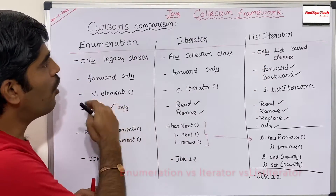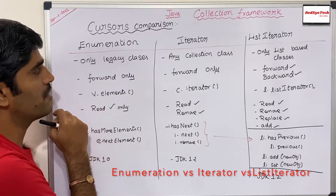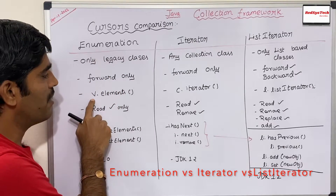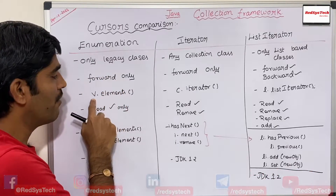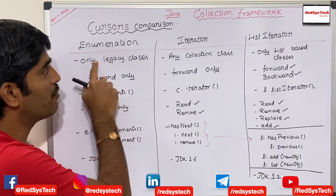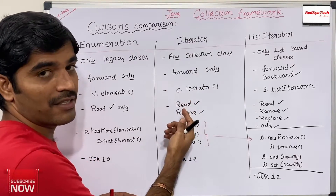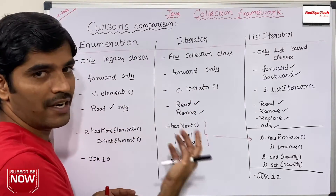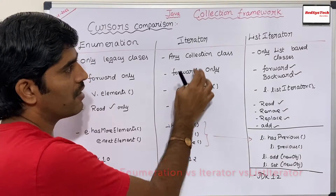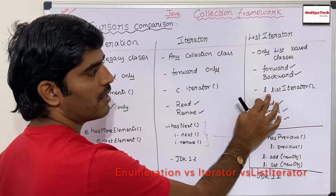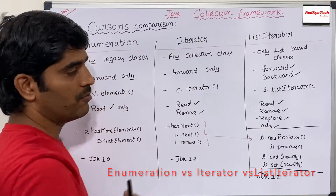How can we get the object of Enumeration? We can use Vector, which is one of the legacy classes, using V.elements(). Using this method, we can get the Enumeration object. Similarly, for any collection classes like ArrayList or LinkedList, you can use C.iterator() which will give you the Iterator, and L.listIterator() — the listIterator() method can be used to get the ListIterator object.